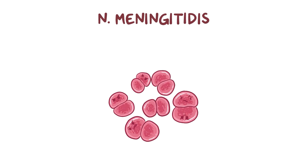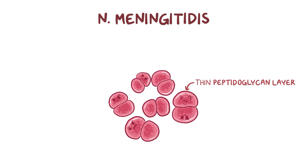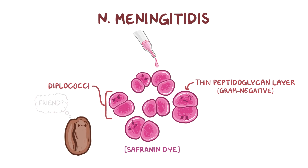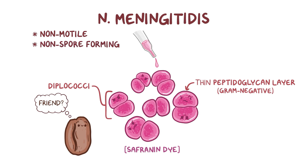N. meningitidis has a thin peptidoglycan layer, so it doesn't retain the crystal violet dye during gram staining. Instead, like any other gram-negative bacteria, it stains pink with safranin dye. N. meningitidis typically lives in pairs called diplococci, stacked side to side, so the pair looks kind of like a coffee bean. They're also non-motile, non-spore-forming, and obligate aerobes, which means they absolutely need oxygen to grow.